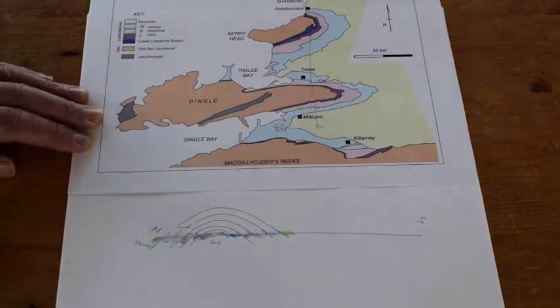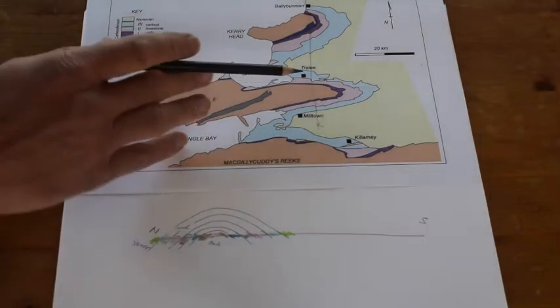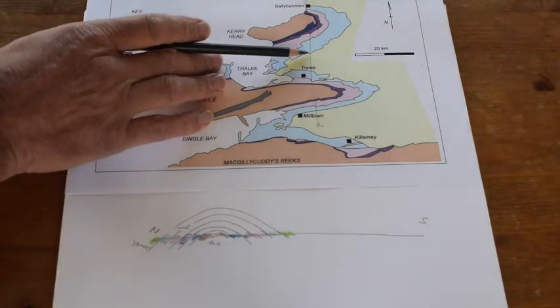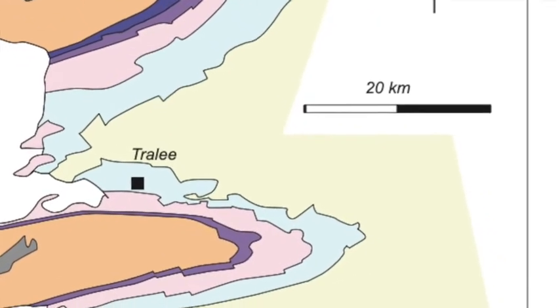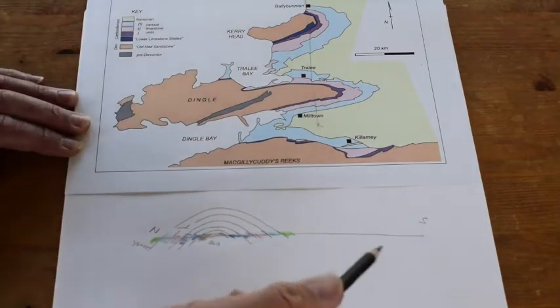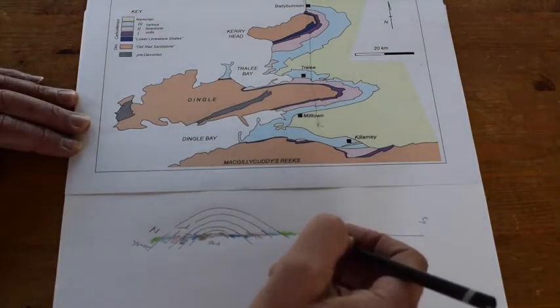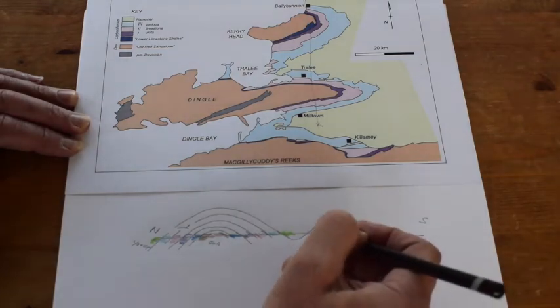A bit more of the units - one, two, three - and then finally into the Namurian. Let's just join them up so we have a structure here, a broad antiformal anticlinal structure with old rocks in the core, young rocks on the flanks.